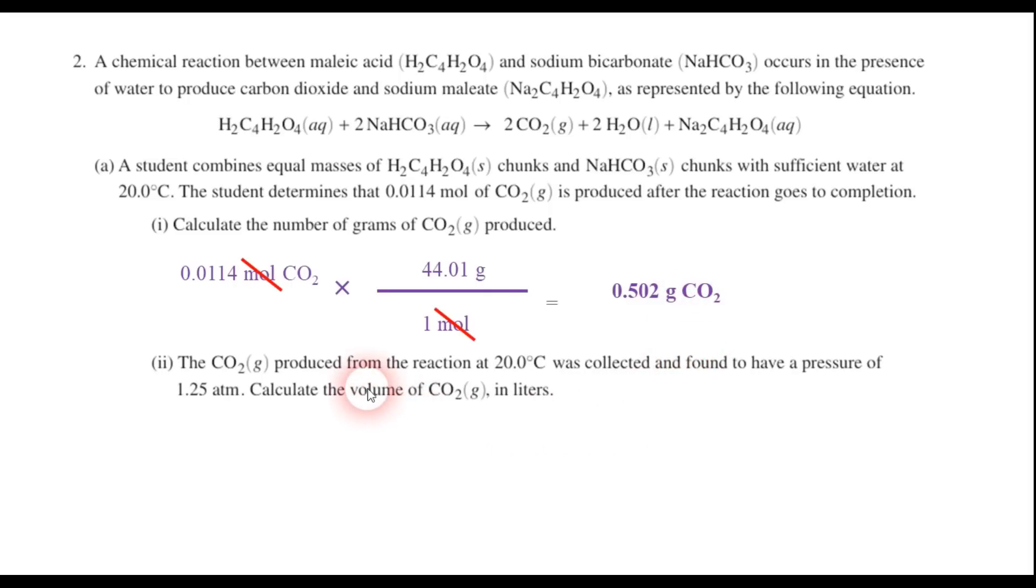Part two says the carbon dioxide gas produced from the reaction at 20 degrees Celsius was collected and found to have a pressure of 1.25 atmospheres. Calculate the volume of carbon dioxide gas in liters. Well, this looks like a good case for the ideal gas law, PV equals NRT, because we have a pressure given to us. It's 1.25 atmospheres. The question asks us to calculate the volume, so we're going to solve for V. Now, the number of moles of carbon dioxide was given to us up here in the header. It was 0.0114 moles, so that goes in for N. Now, R is about 0.0821. I'm going to go ahead and use the 0.08206 liter atmospheres per mole Kelvin given to us in the equation packet just to be that much more precise. And then T is temperature. Well, it's 20.0 degrees Celsius, and if we convert that to kelvins by adding 273.15, we get very close to 293.2 kelvins. So when I plug these numbers in, I can use some algebra to solve for volume, and the V is equal to about 0.219 liters.